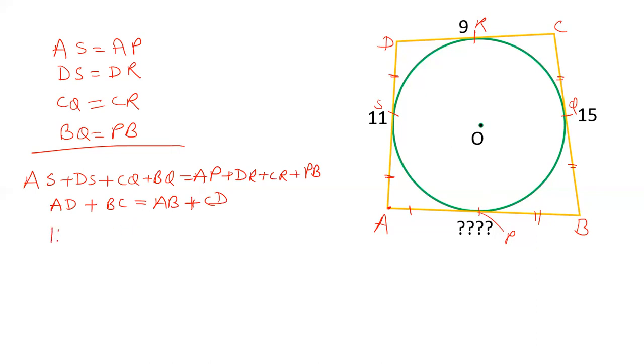AB is given as 11, DC is given as 15, AD we have to calculate - let's say it is x, and CD is given as 9. The value of x will be 11 plus 15 minus 9, which is 26 minus 9 equals 17. So the value of AD will be 17.